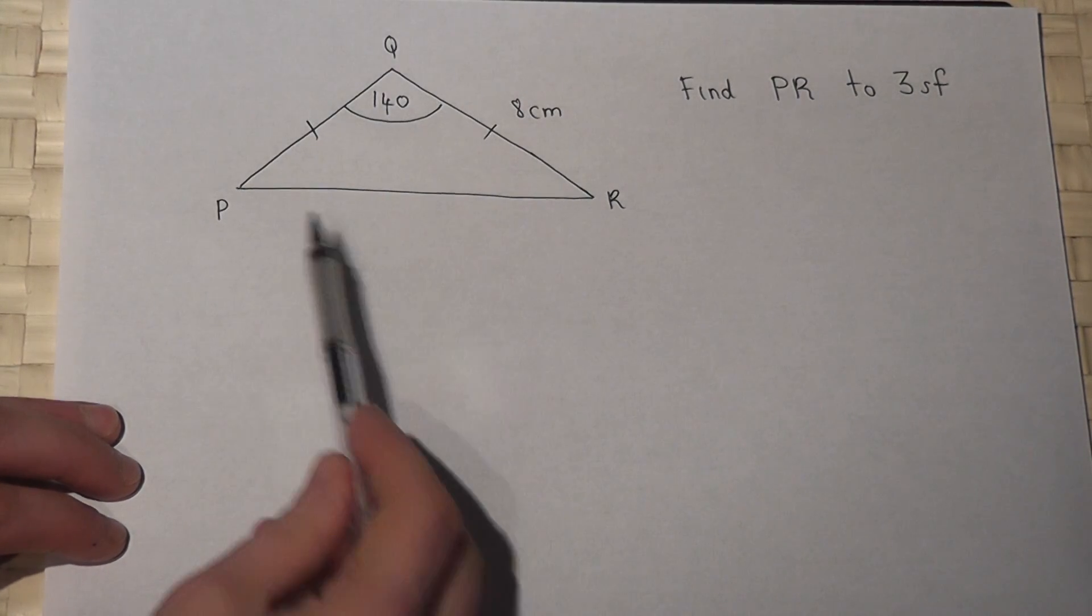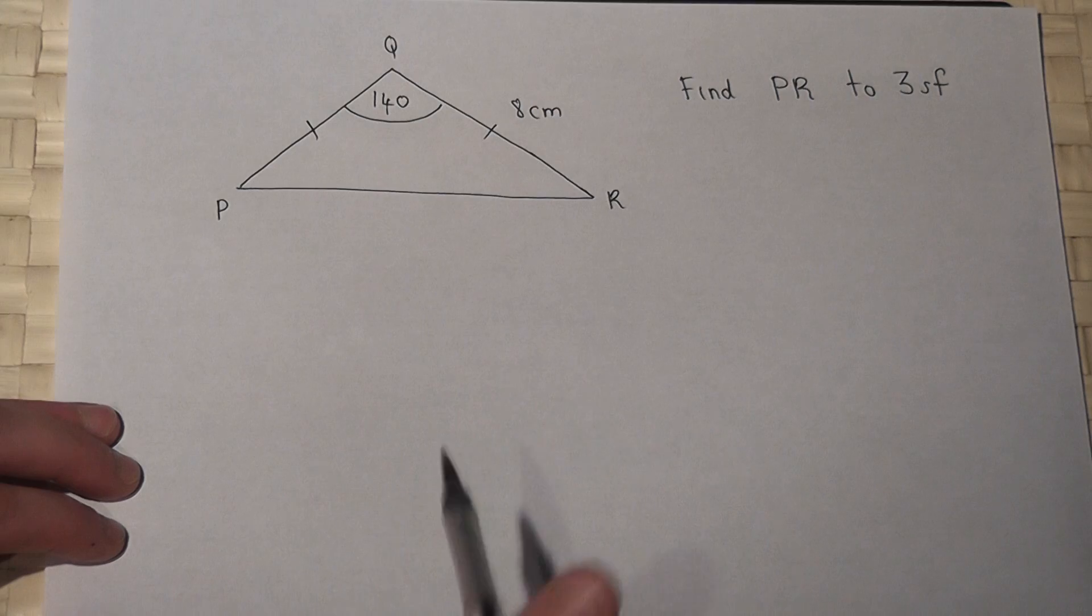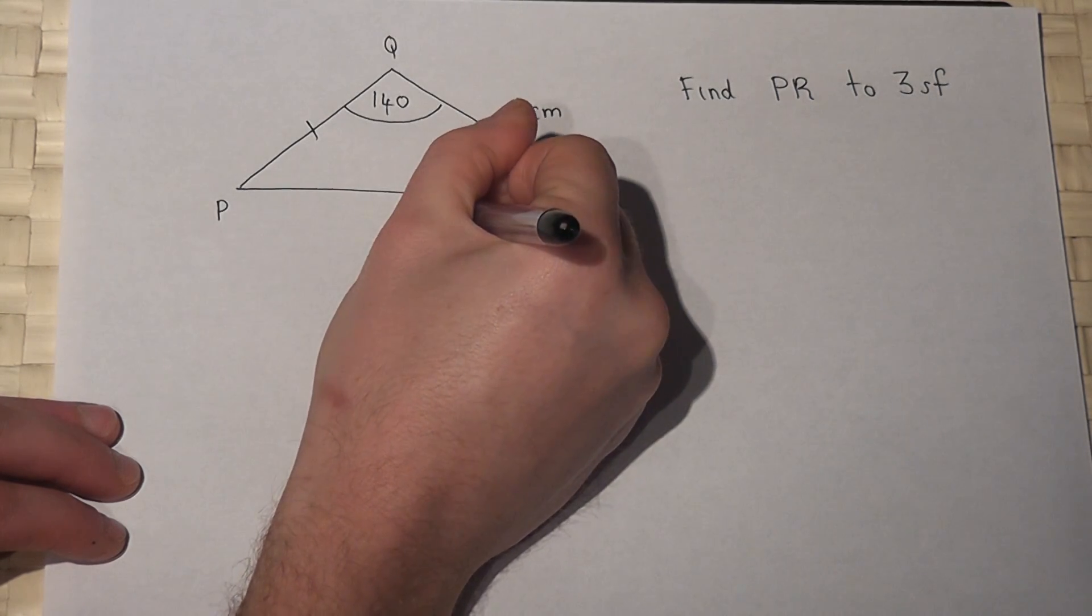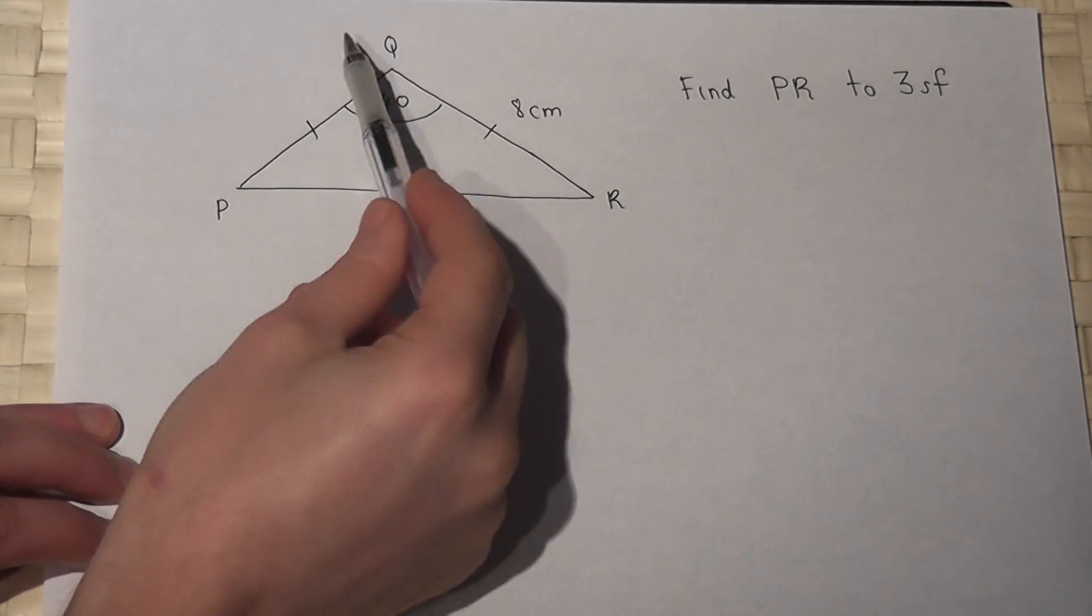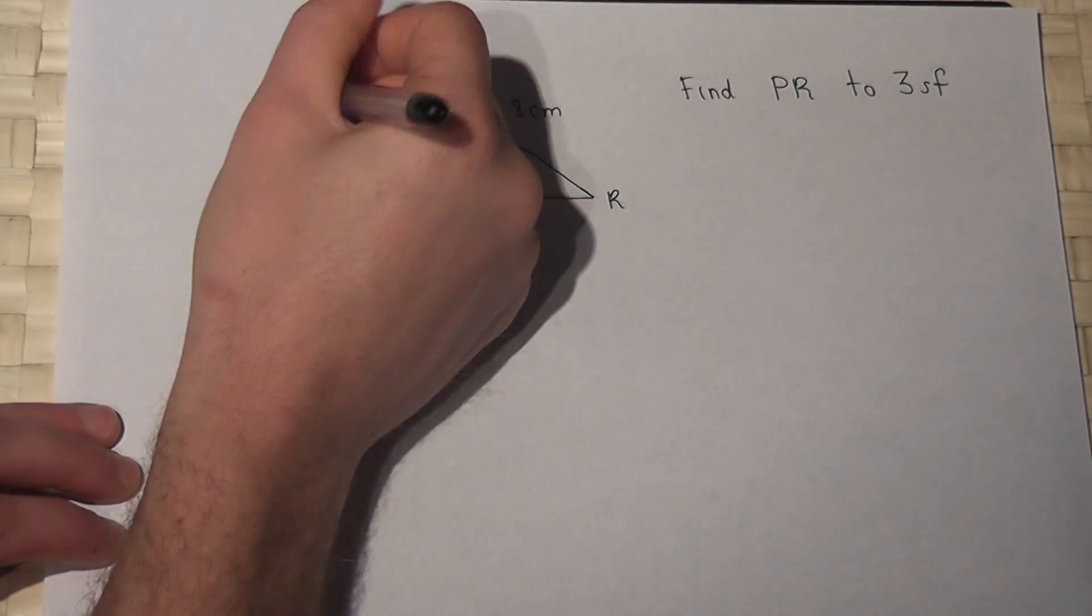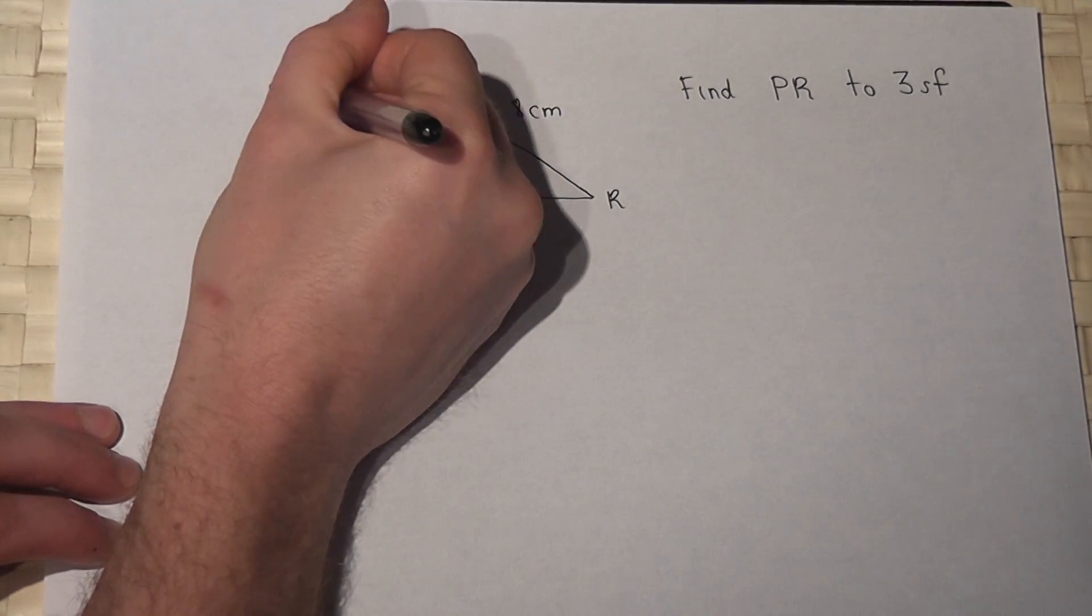In this question we're asked to find the length PR, which I'll call X. Now because this triangle is isosceles, then this side here will be eight centimetres.